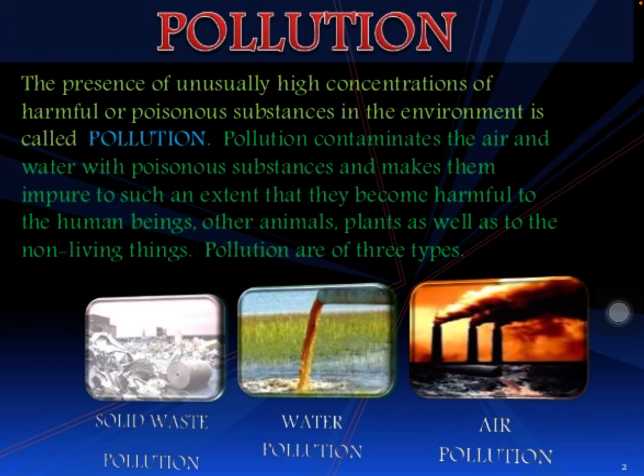Pollution क्या होता है — जब हमारे environment में harmful या poisonous substances की concentration जितनी होनी चाहिए उससे बहुत बढ़ जाती है, तो हमारा environment polluted कहलाता है। वो substances हमारी air और water में mix होकर उसको contaminate कर देते हैं। इसी को हम pollution बोलते हैं। Pollution contaminates air and water with poisonous substances.